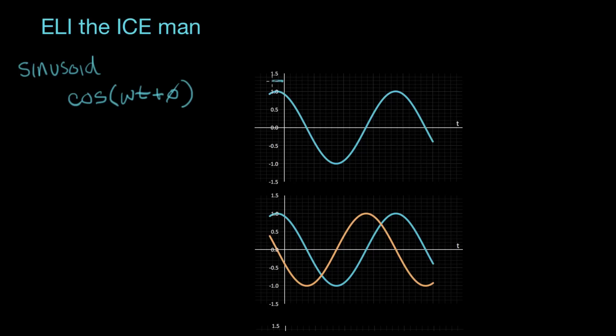So this distance right here is the lead, the phase lead. And that's phi. So when phi is a positive number, this whole cosine wave is shifted a little bit to the left. That's what we mean by phase shift.